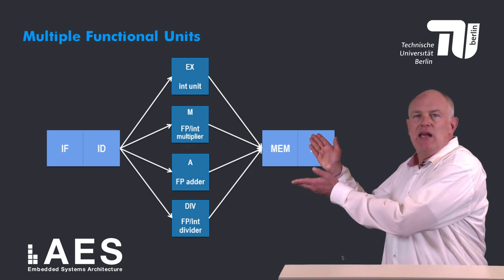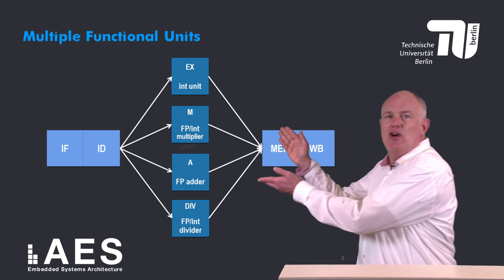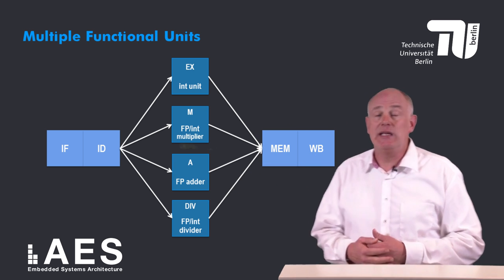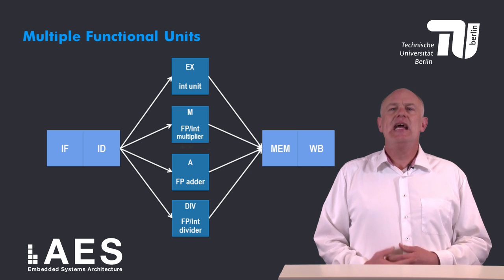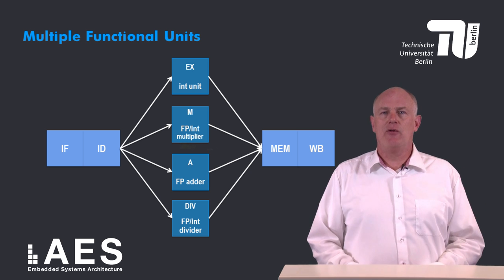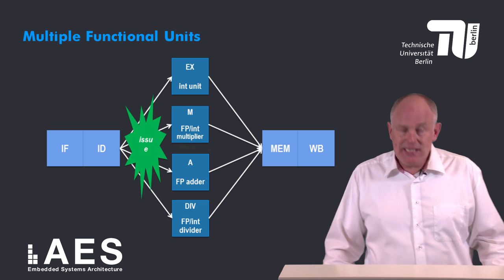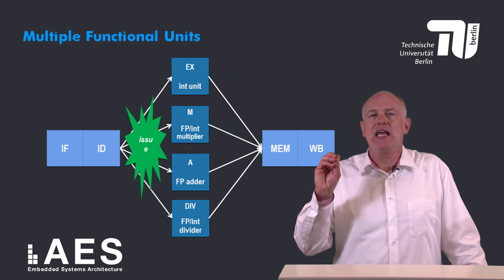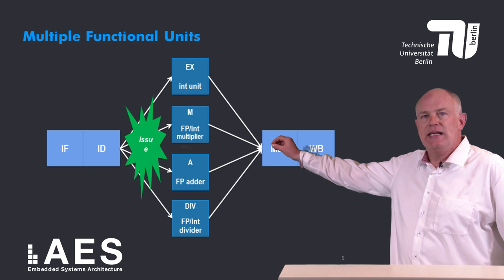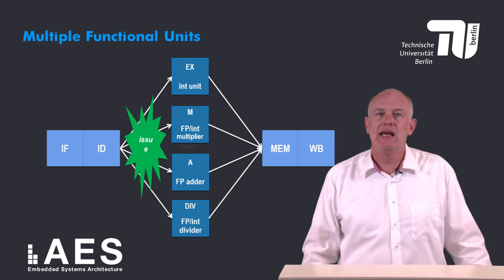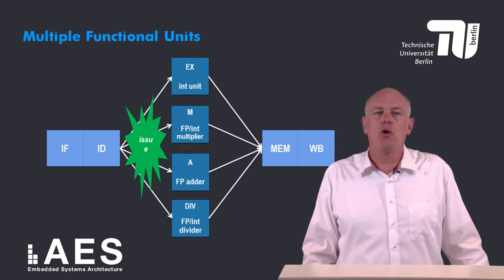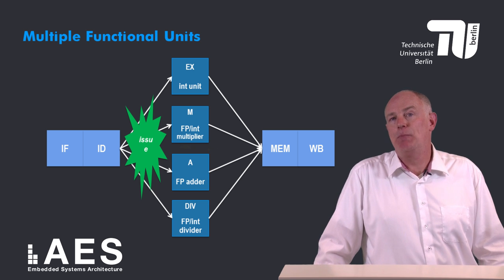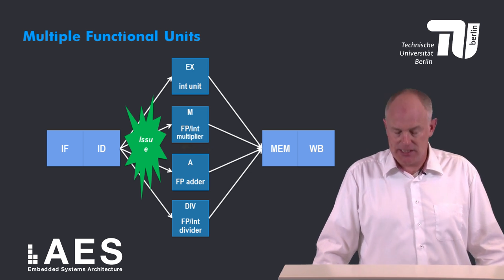We see that moving an instruction from the instruction decode stage to the functional unit that will execute it is not as straightforward as before. For this reason, the dispatching or issuing of the instruction from the decode stage to the appropriate functional unit is often called the issue step, and sometimes it is even a separate pipeline stage or stages.